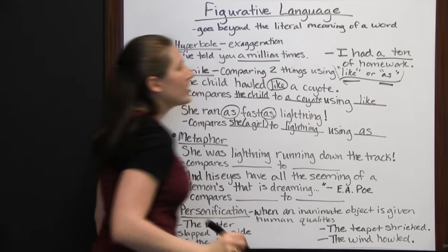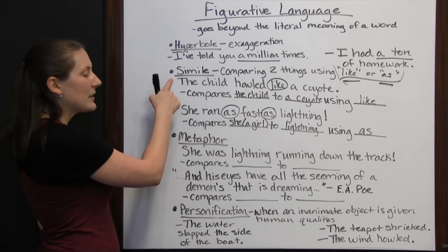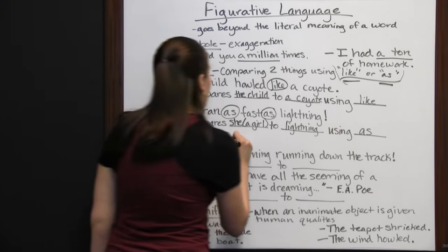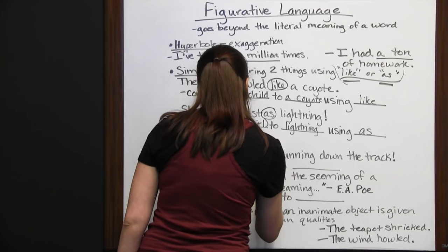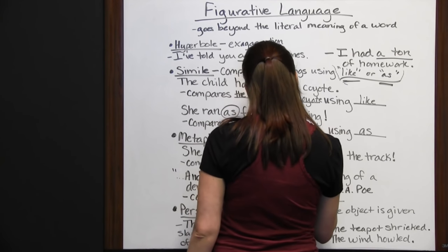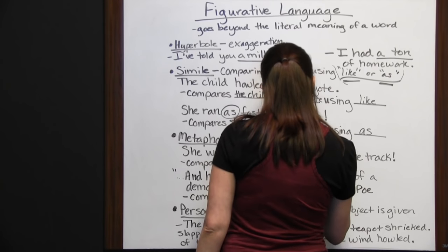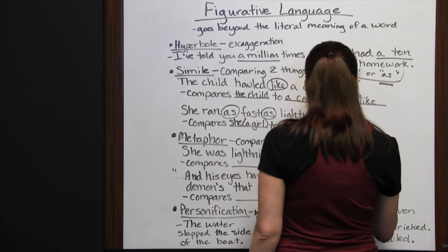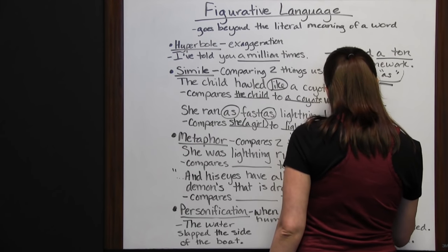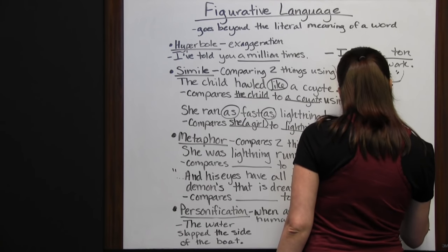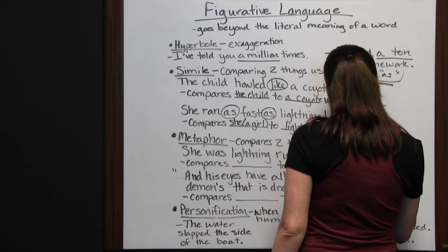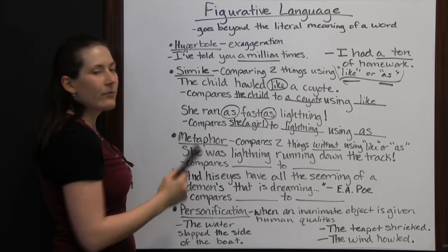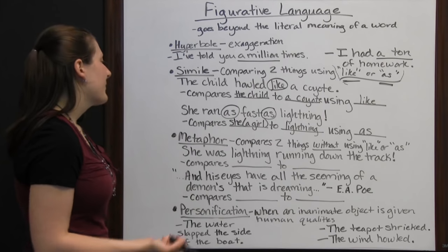A metaphor compares two things without using "like" or "as" — that is really the big difference between a simile and a metaphor. A simile uses "like" or "as"; a metaphor does not. Let's look at some metaphor examples.